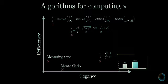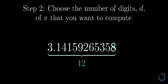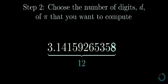I mean, think about the actual algorithm here. Step one, implement a physics engine. Step two, choose the number of digits d of pi that you'd like to compute. Step three, set the mass of one of the blocks to be 100 to the power d minus 1.